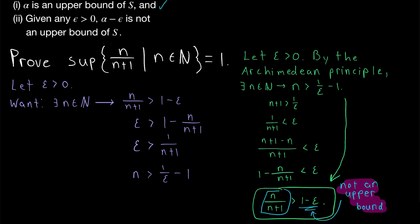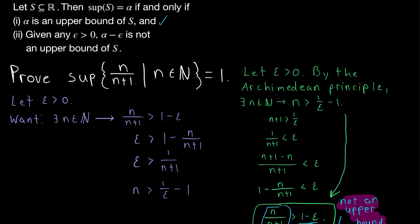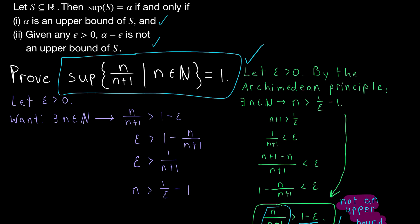That completes the proof. We've shown that 1 is an upper bound (the first condition), and we've shown that if we reduce 1 at all, we no longer have an upper bound (the second condition). Thus 1 is the least upper bound, so the supremum of the set is 1. This means the elements of this set get arbitrarily close to 1 — you could give me a number as close to 1 as you want, as long as it isn't 1, and I could find an element in this set even closer to 1.